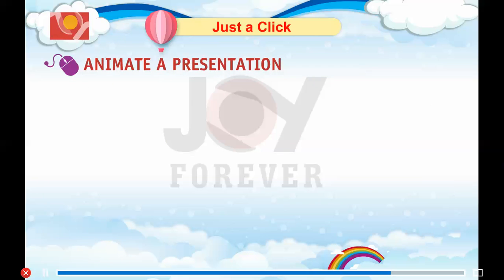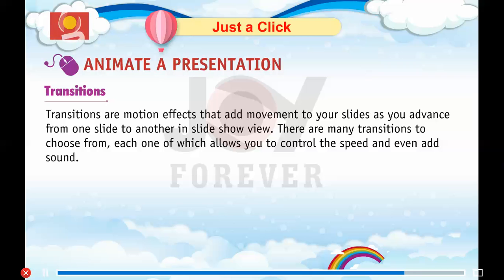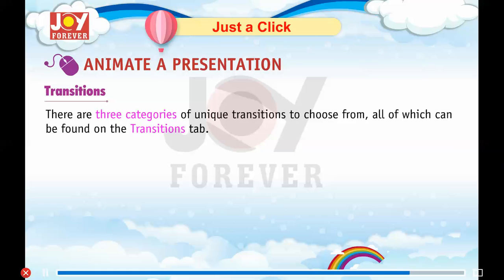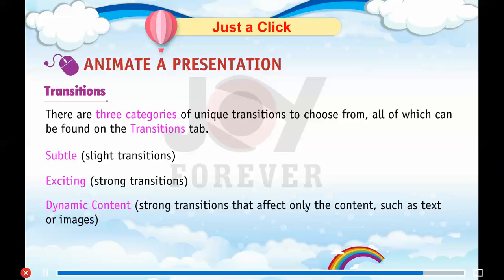Animate a presentation. Transitions. Transitions are motion effects that add movement to your slides as you move from one slide to another in slideshow view. There are many transitions to choose from, each allowing you to control the speed and even add sound. There are three categories of transitions: Subtle slide transitions, Exciting strong transitions, and Dynamic content — strong transitions that affect only the content such as text or images. All can be found on the Transitions tab.